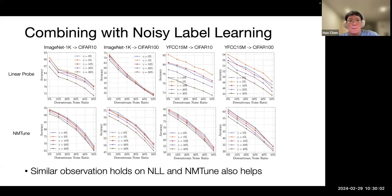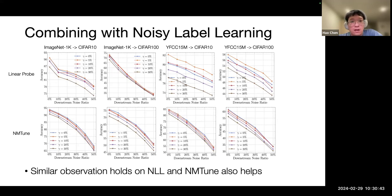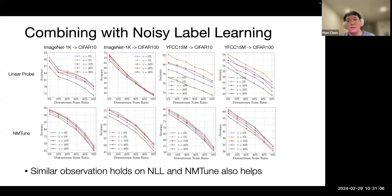Our method can also be combined with noisy label learning, where both pre-training and downstream data contain noise. We validate this on noisy CIFAR-10 and CIFAR-100. Even when adapting noisy pre-trained models on noisy downstream tasks, 5–10% pre-training noise still benefits performance under linear probing. Adding our proposed method rectifies the pre-training noise effect while also improving general performance, demonstrating that noisy model learning is complementary to traditional noisy label learning.